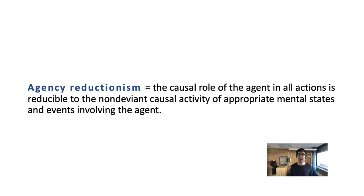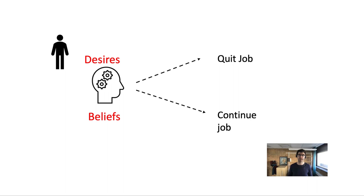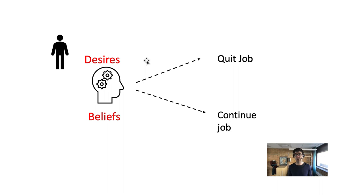While Franklin thinks the disappearing agent objection is not very convincing, he thinks there's a different argument — the 'it-ain't-me' argument — that is genuinely threatening. The it-ain't-me argument is motivated by the intuition that when we make a decision, it feels like we can step back from our particular beliefs and desires, reflect on them, and then determine ourselves which decision we make. For example, thinking about whether to quit your job, you find yourself with various beliefs and desires — you hate your job, but you need the money — and these are your reasons.